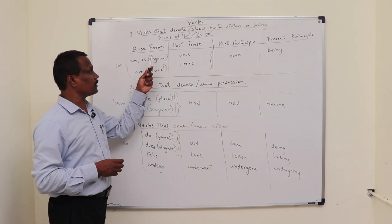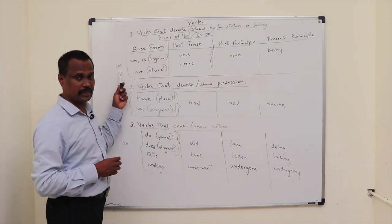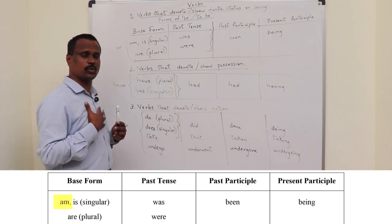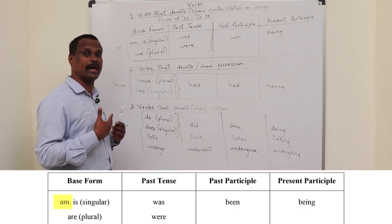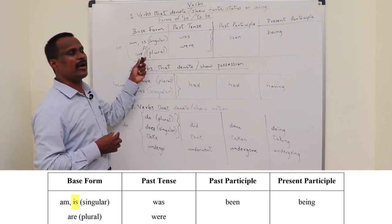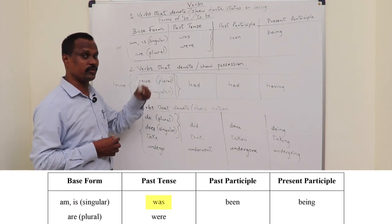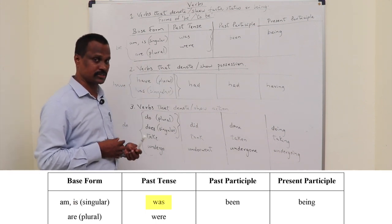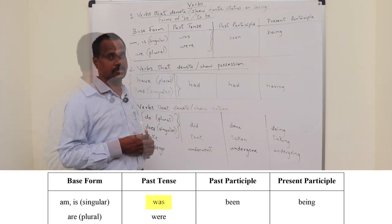So, to give examples of the first category of verbs, that is the word be, am is only used for the subject I. For example, I am a teacher or I am a nurse. In the OET context, Miss Mary is a cancer patient. Or, if we are talking about a past situation, Miss Mary was a cancer patient.